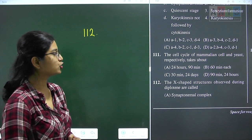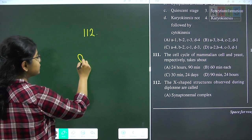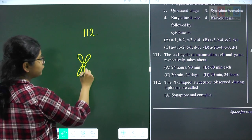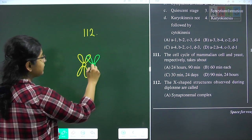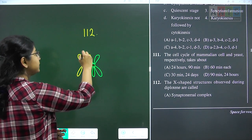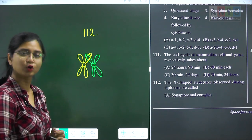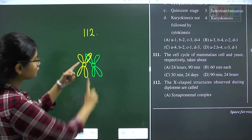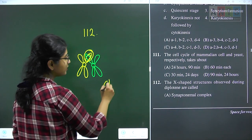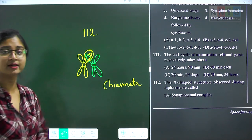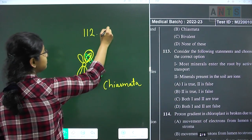Question 112: the X-shaped structures observed during diplotene are called? During diplotene, the synaptonemal complex dissolves and chromosomes are no longer associated, but exactly where crossing over has occurred, the non-sister chromatids of homologous chromosomes still appear joined, giving rise to an X-shaped structure. This X-shaped structure is called chiasmata. Question 112 answer is option B, chiasmata.